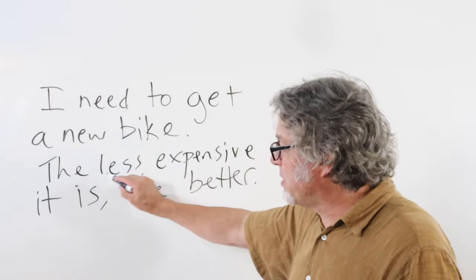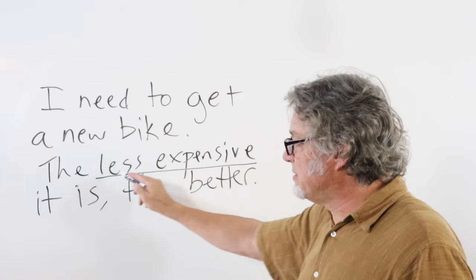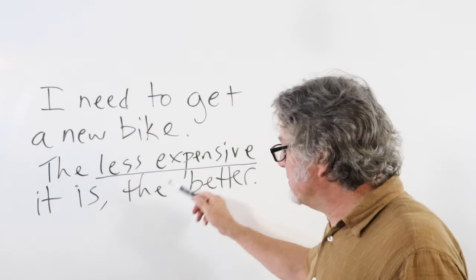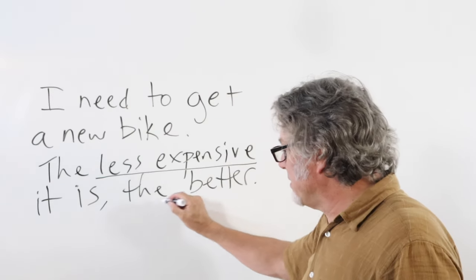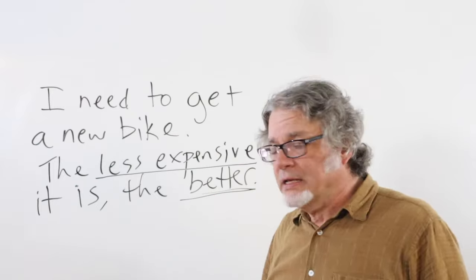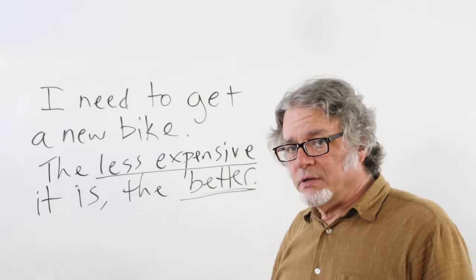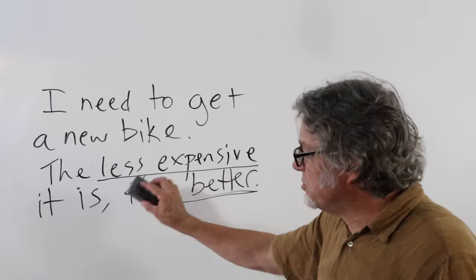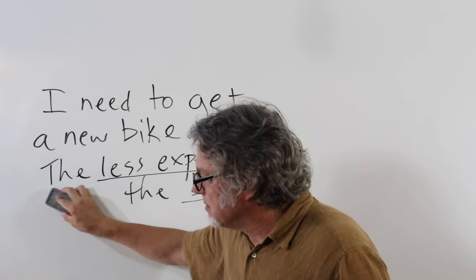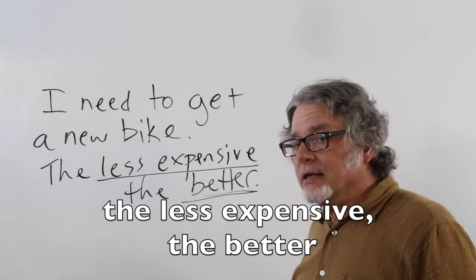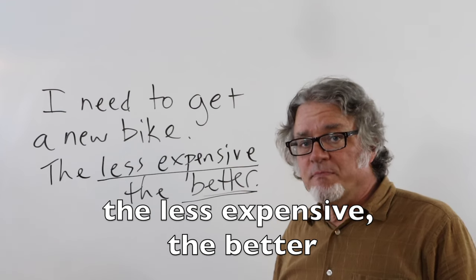So here's a comparison. Here's a comparative: 'less expensive.' And then here's the comparative on this side. There usually is a comma after that first part. And you could just eliminate this and say 'the less expensive, the better.'